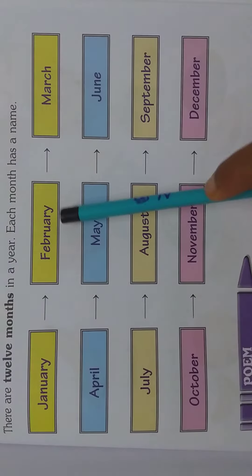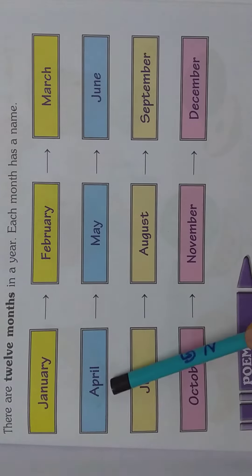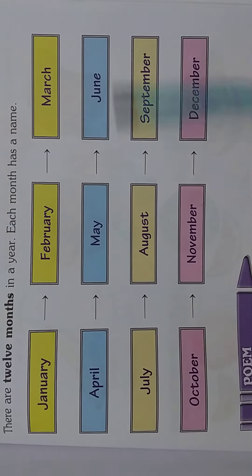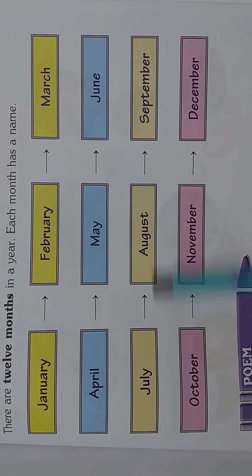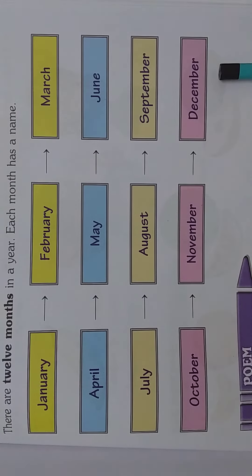January, February, March, April, May, June, July, August, September, October, November, December.